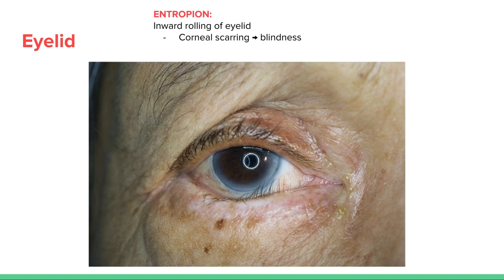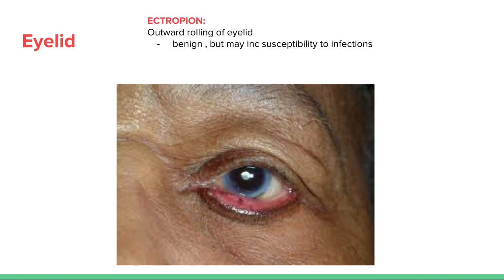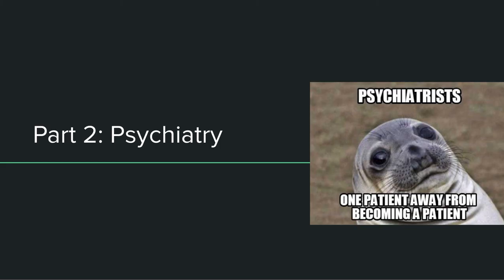An entropion is the inward rolling of the lower eyelid — the lashes can scar the cornea and lead to blindness. An ectropion is the opposite — outward rolling of the eyelid — which is benign but may increase susceptibility to infections. That's all for this video, and I'll see you in the next one for the psychiatry module.